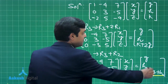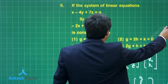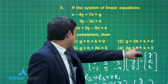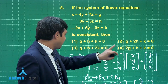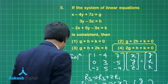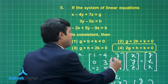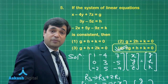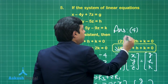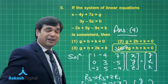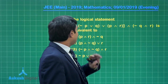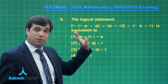The only constraint required is k + 2g + h = 0. Looking at the options, this matches option number 4. So the correct answer for this question is option number 4.